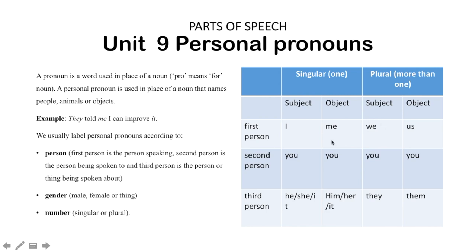We've got some examples over here. So if we were writing in first person, we would say things like 'I' or 'me.' If we're writing in second person, it's 'you.' If we're writing in third person, we have much greater variation. Let's move on.